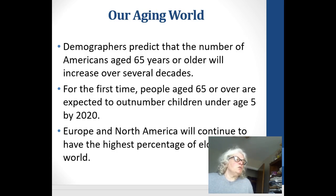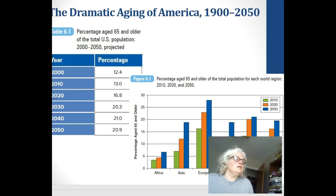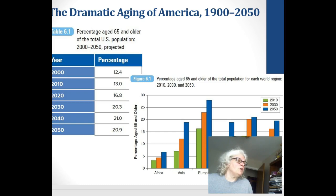Europeans and North Americans will continue to have a very high percentage of elderly in the world. Japan is right there with them. We see this dramatic increase in aging, and it is based on demographics. Part of the reason there are so many more older adults is that there are fewer children being born as well.